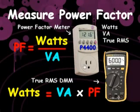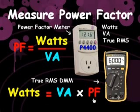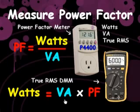This power factor meter also measures watts, VA, and true RMS current and voltage. If the device manufacturer specifies the power factor, you can calculate watts by using a digital multimeter to measure the volt-amps, and then multiplying that times the power factor.